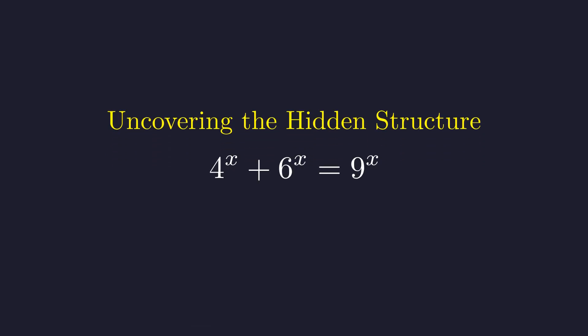When faced with different bases, it's always worth asking, are they truly unrelated or is there a pattern we can exploit? Let's break these down. Notice that 4 is 2 squared, 9 is 3 squared, and 6 is 2 times 3. This isn't just a coincidence, it's the key insight that will unlock our approach to the entire problem.